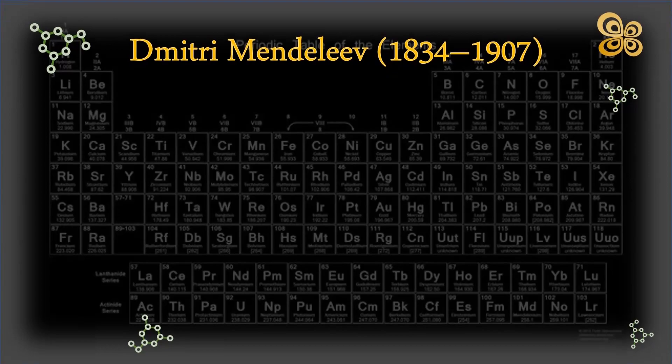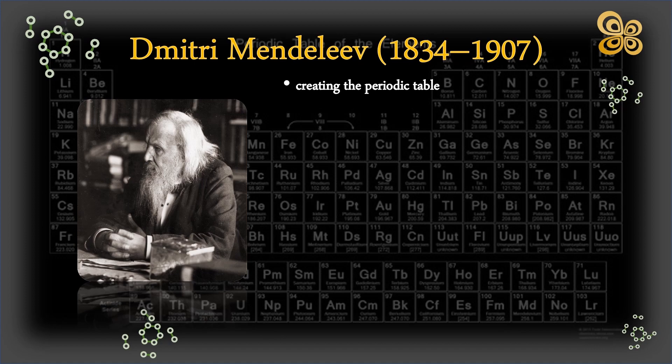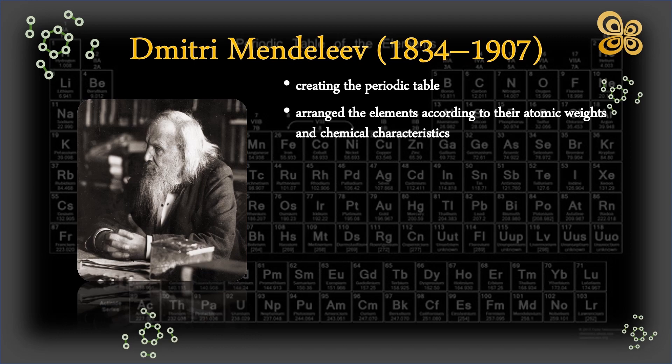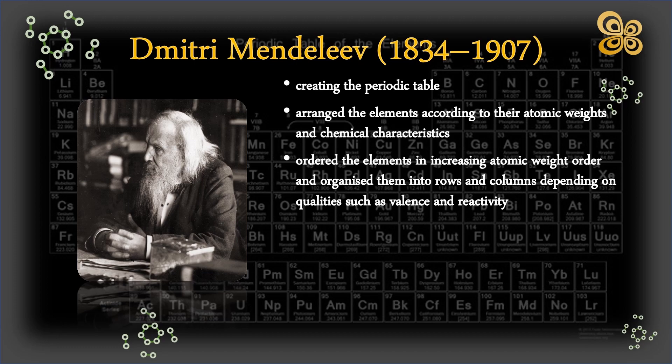Russian chemist Dmitri Mendeleev is well known for creating the periodic table. He is credited as one of the pioneers of modern chemistry, and the periodic table he created is still used to this day to explain the characteristics and behavior of the elements. Mendeleev arranged the elements according to their atomic weights and chemical characteristics in a study released in 1869, ordering the elements in increasing atomic weight order and organizing them into rows and columns depending on qualities such as valence and reactivity.